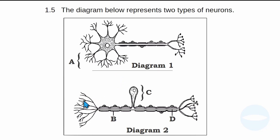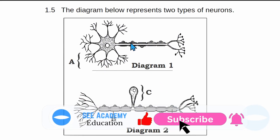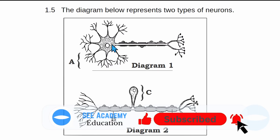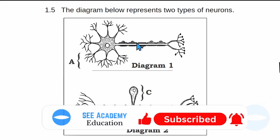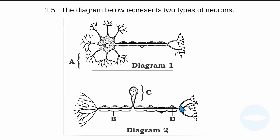Another difference is the dendrite. The sensory neuron has a long dendrite — as you can see, these dendrites are very long — but the motor neuron has a short dendrite. Another difference is the axon. The axon of a sensory neuron is short, while the axon of a motor neuron is long. The axon is this tube that takes the impulse from the cell body to another neuron.